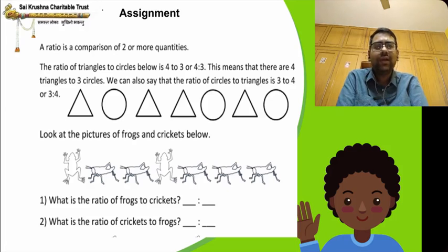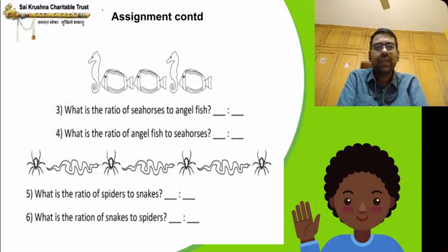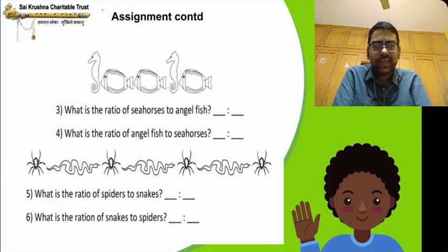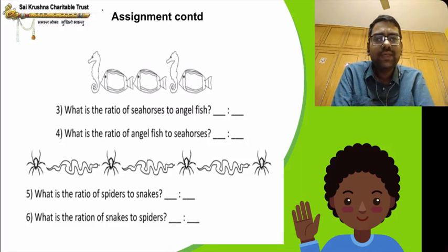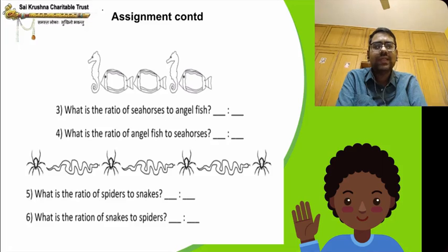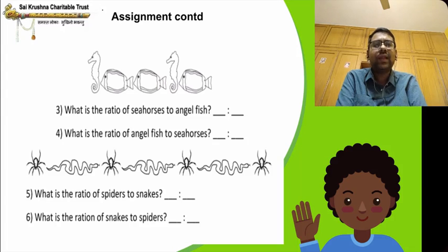Some questions are given for you to solve yourself. Look at the pictures of frogs and crickets — there are 2 frogs and 5 crickets. Find the ratio of frogs to crickets and ratio of crickets to frogs. Next, find the ratio of sea horses to angelfish — there are 2 sea horses and 3 angelfish. Also find the ratio of spiders to snakes and snakes to spiders — there are 4 spiders and 3 snakes. Try to do this yourself; we will continue in the next session.